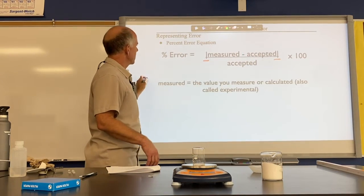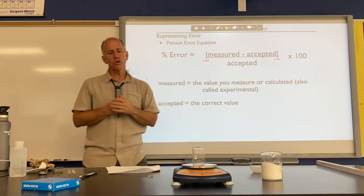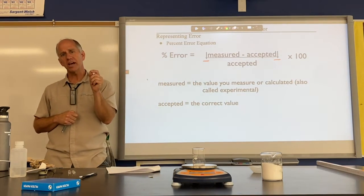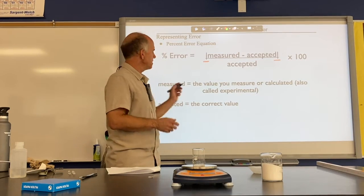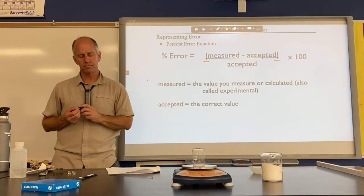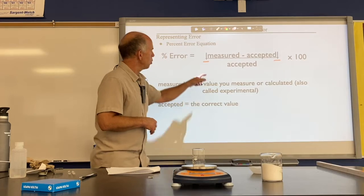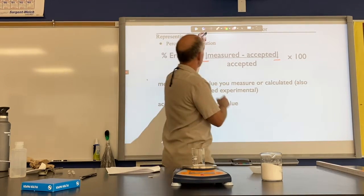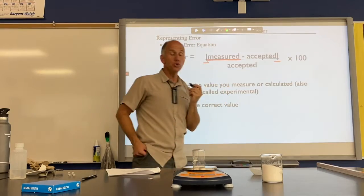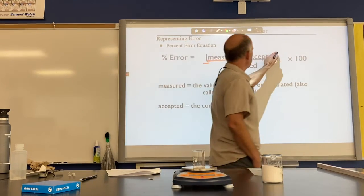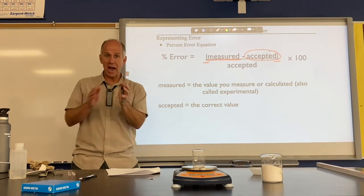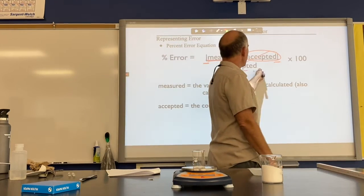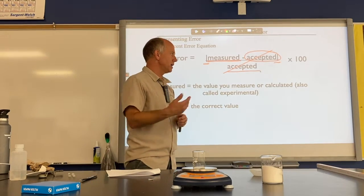The measured value is the value you measured or calculated — some call it the experimental value — and it's the number you're checking the accuracy of. The accepted value is the correct answer. So really you're comparing what you did get with what you should have got, subtracting to find the distance between them, dividing by what you should have got, and multiplying by 100.